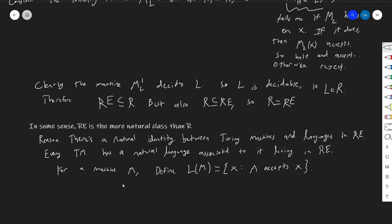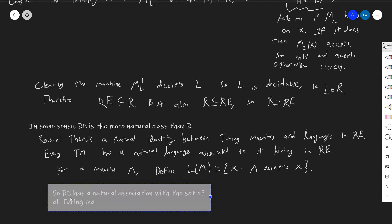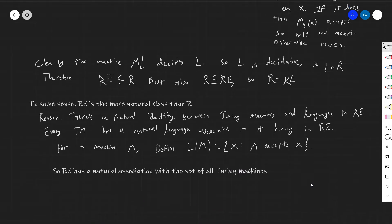Being in R means there exists a special Turing machine that does a specific thing, whereas being in RE doesn't really say something like that. So RE more naturally associates with the set of all Turing machines — there's a kind of natural identity there, whereas there isn't that for R.